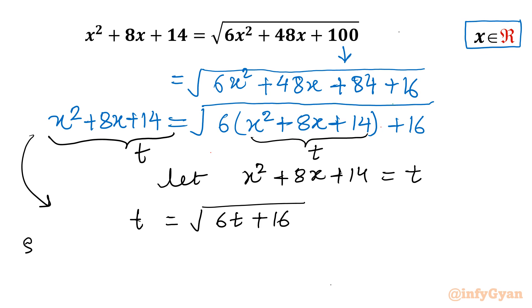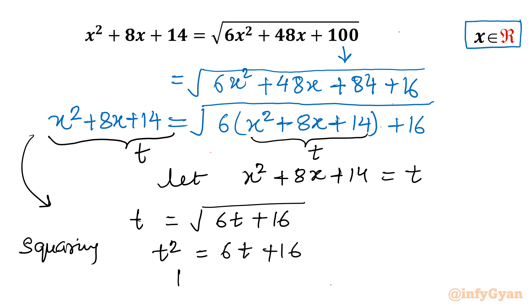Now I will square both sides. Squaring both sides gives t² = 6t + 16. Taking all terms to one side: t² - 6t - 16 = 0.